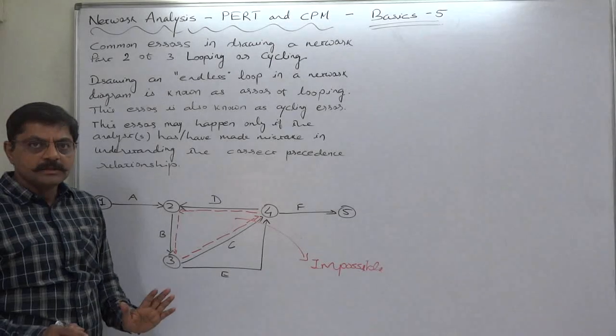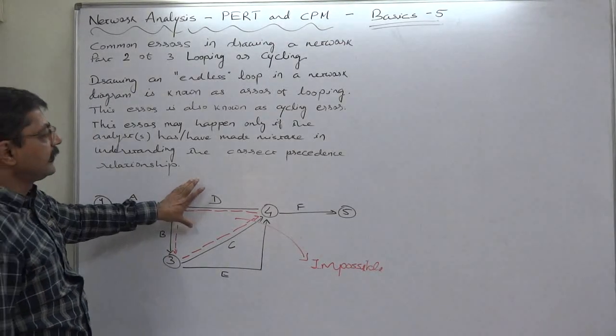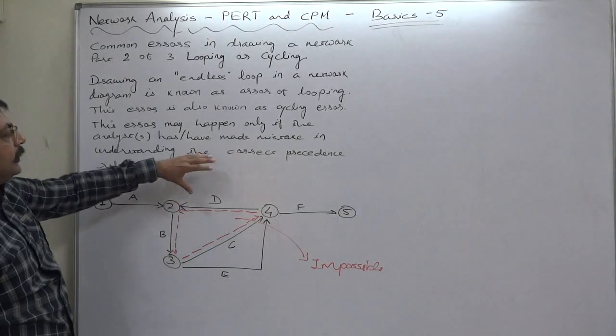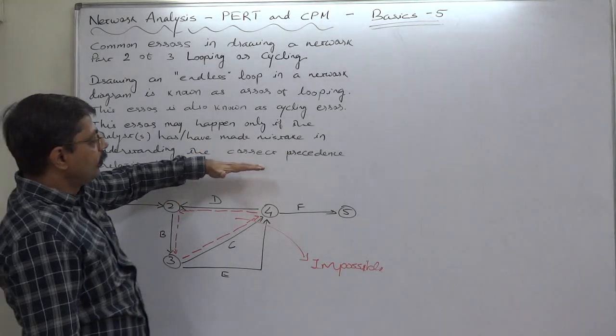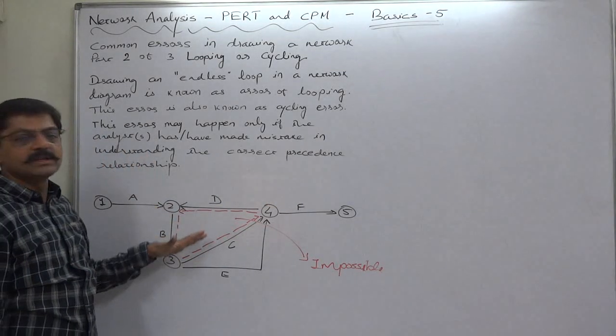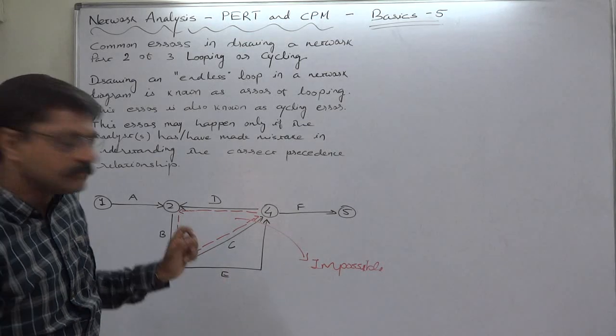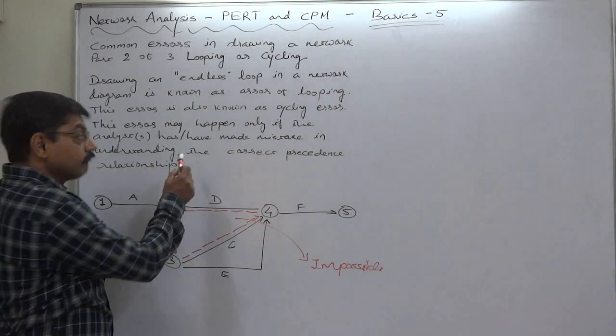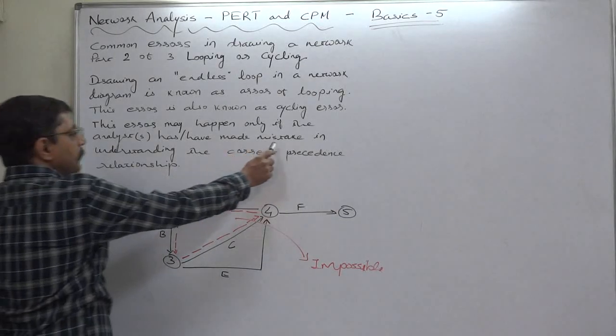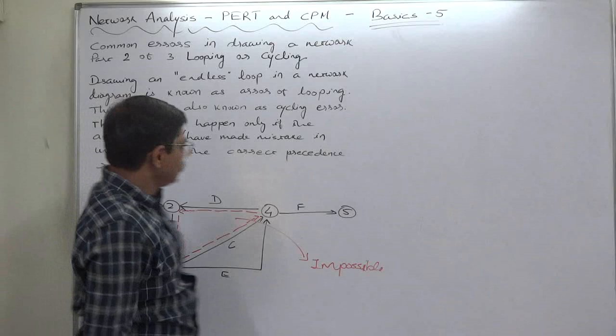But generally this kind of error can take place from the data on the basis of which the person is trying to draw the network diagram, and the main cause might be the mistake in understanding the correct precedence relationship.